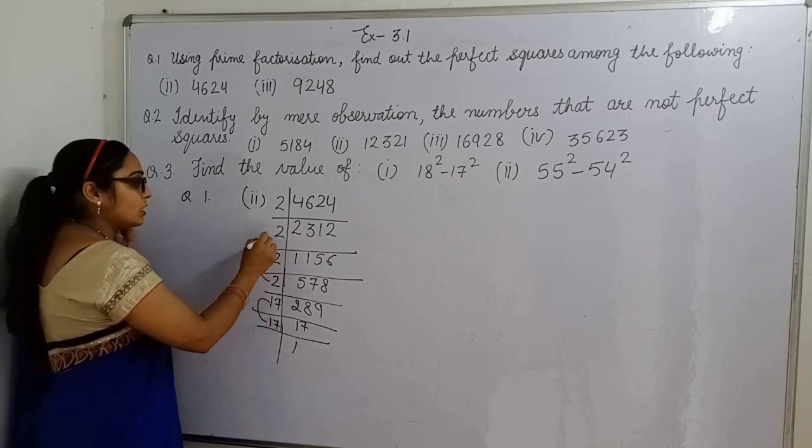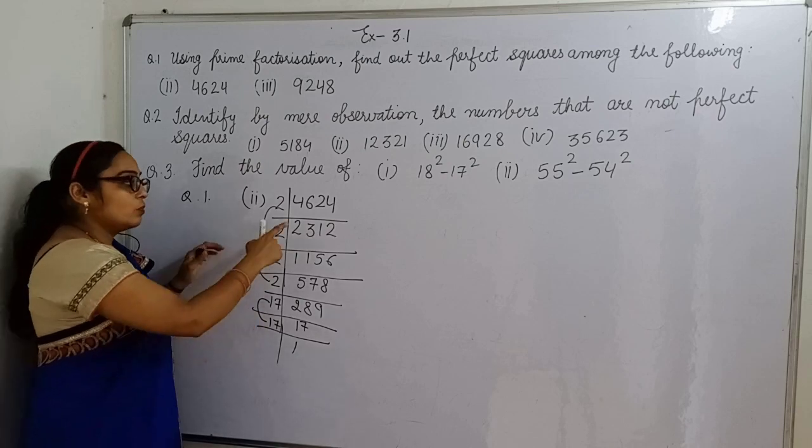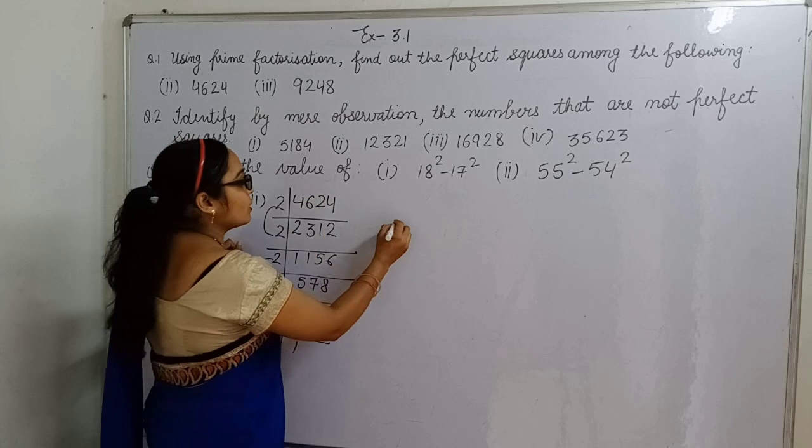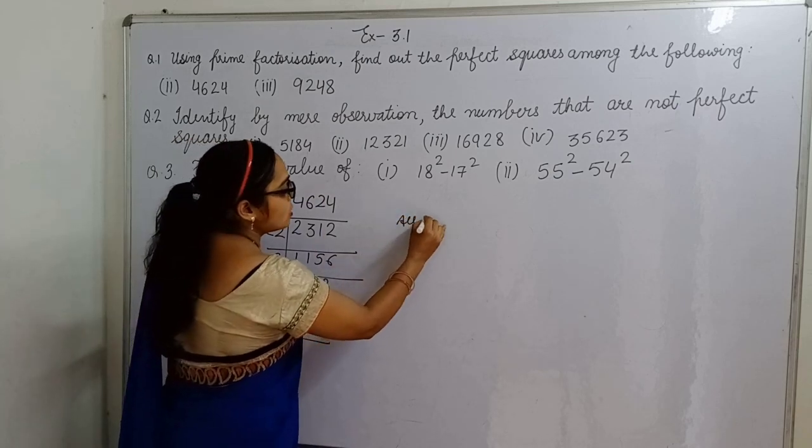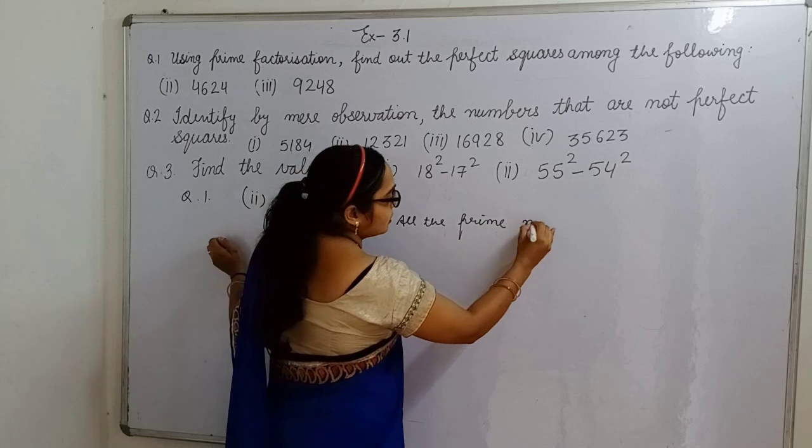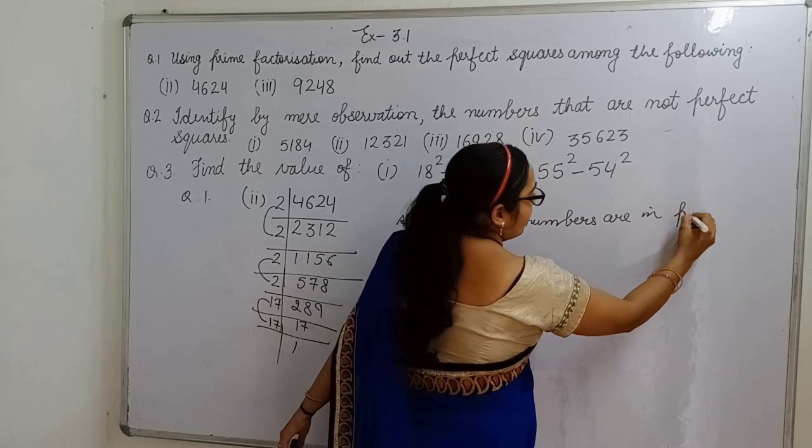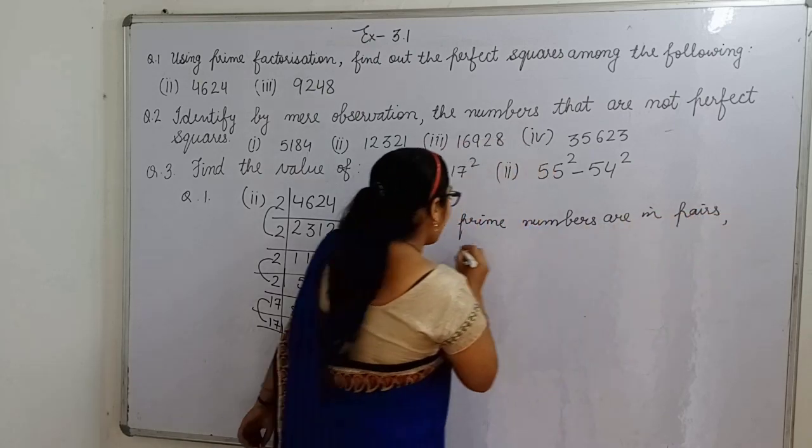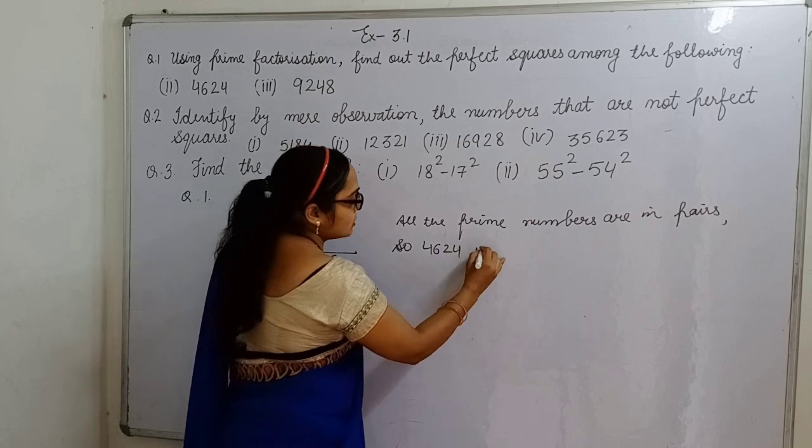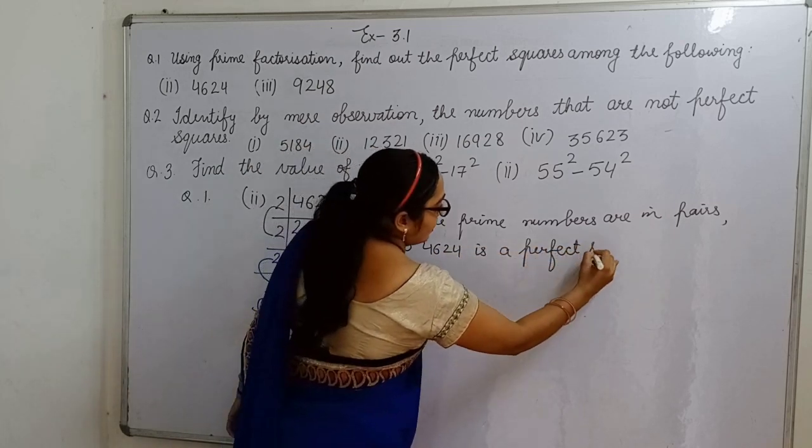Now check all the prime factors are in pairs. It means 4624 is a perfect square. Or you can write, all the prime numbers are in pairs, so 4624 is a perfect square.